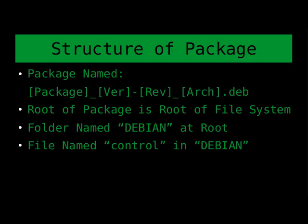So that's the folder. In the root of the package is going to be a sample of the root of the target file system. If you need something to go into a particular folder, you create that folder inside of the folder we created. There's also going to be a folder named DEBIAN — capitalized, that's very important — right inside your package folder. And then there will be a file named Control in that DEBIAN folder, and there could also be up to four scripts in there.